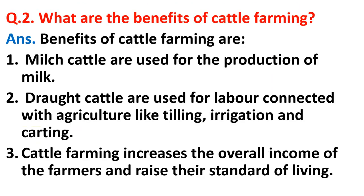Question two: What are the benefits of cattle farming? Number one, dairy cattle are used for the production of milk. Number two, draught cattle are used for labor connected with agriculture like tilling, irrigation, and carting. Number three, cattle farming increases the overall income of farmers and raises their standard of living.